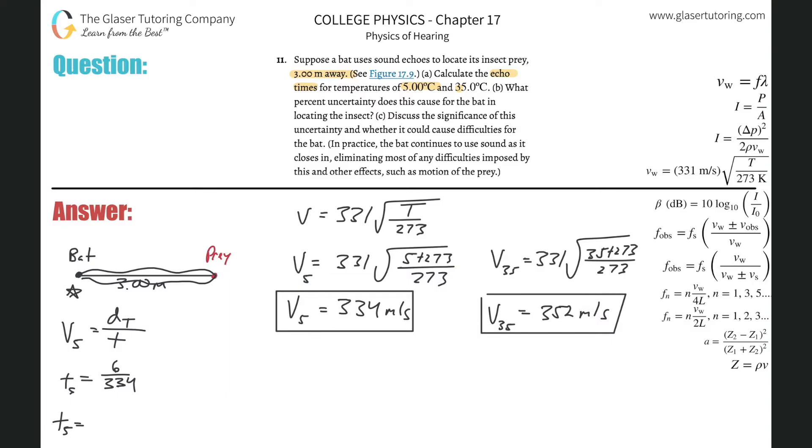If I use that distance, then I'm solving for the time it takes for the bat to register the sonar echo. So it's going to be the total distance of 6 divided by that 334. The time it took at 5 degrees Celsius is going to be 6 divided by the exact value which is really close to 334. So this is going to work out to be 0.01796 seconds. Now I'm going to do the same thing for 35 degrees Celsius. Do you think it's going to be faster or slower?